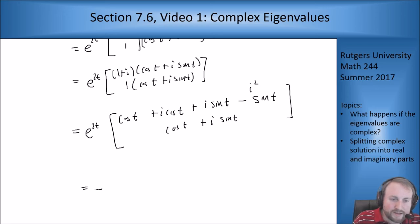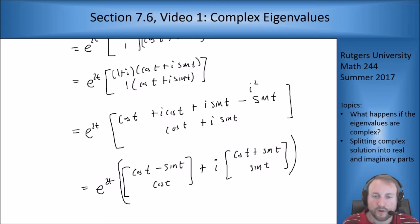So I can write this as e to the 2t times (cosine t minus sine t, cosine t) plus i times (cosine t plus sine t, sine t). Right, vectors when you add them you add them component wise so I can just split up the two parts and put them in two separate vectors and get a real vector and imaginary vector.